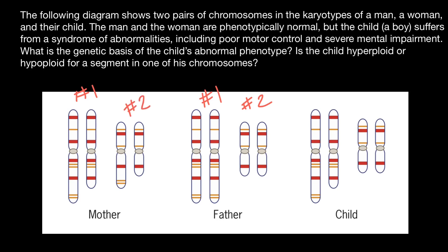So these are homologous chromosomes, and these chromosomes have to be of identical size with an identical set of genes. We see in the child that chromosome number one is of a different size, and chromosome number two is of identical size. But the child suffers from a number of genetic disorders — so what's going on here? Let's look at the father's genotype, because the father has a normal genotype with all four chromosomes identical.